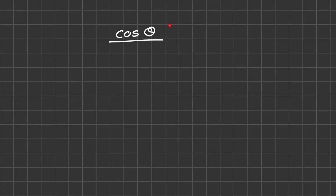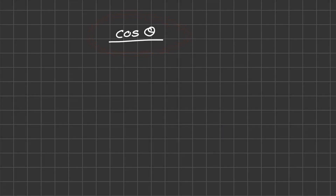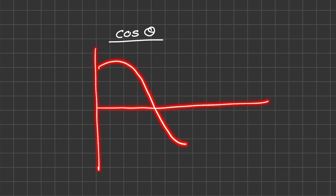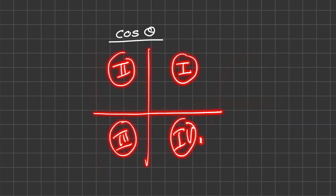Here is a quick summary of the cosine of theta. We'll discuss the ratio in terms of a triangle, also how the ratio looks like as a function or a graph, and lastly the properties of the cosine of theta on the Cartesian plane.